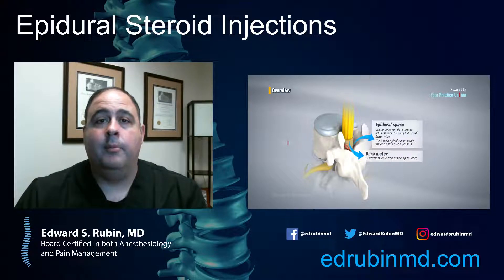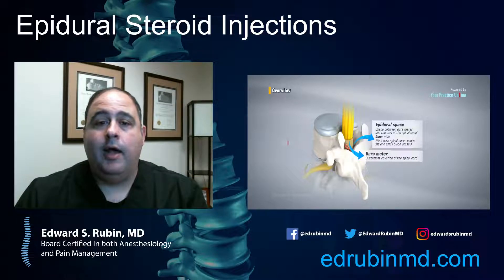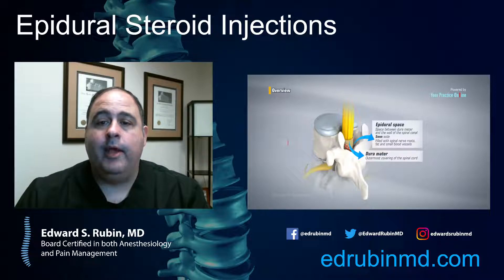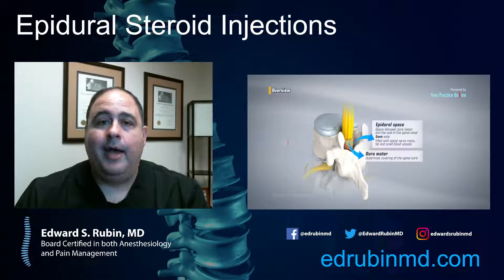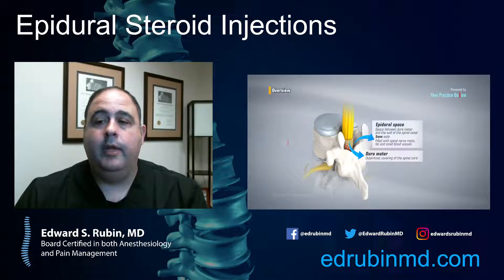How would you determine where the problem is coming from? You would send the patient for an MRI. Pretty confidently, 100% of our patients are getting MRIs prior to an injection like this. How recent does the MRI have to be? That's not a set-in-stone number, but typically about two years would be a reasonable look-back. If somebody's been in an accident or fell down the stairs, you may want to re-image, but you want imaging in general to identify where we're targeting.